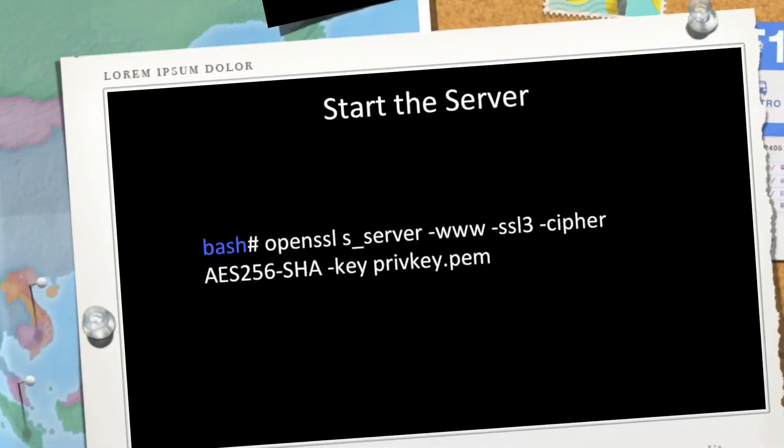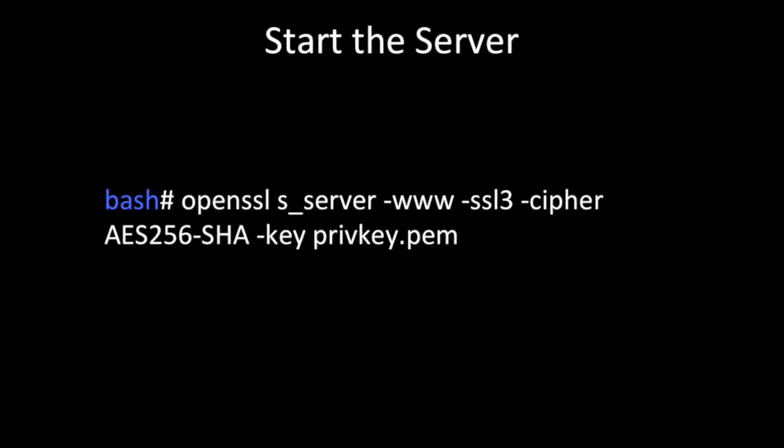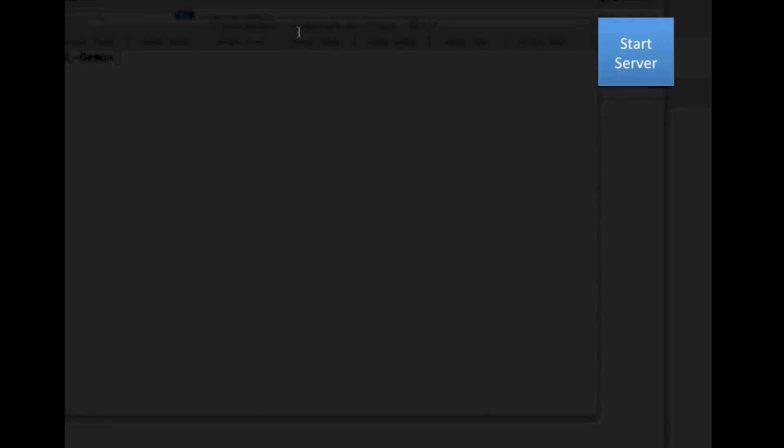Now we have the certificate and private key, so we will start the server. To start the server we use the OpenSSL command: openssl s_server with protocol version SSL 3. The cipher block we are using is AES (Advanced Encryption Standard) with 256-bit key length, and SHA (Secure Hash Algorithm), along with our generated private key.